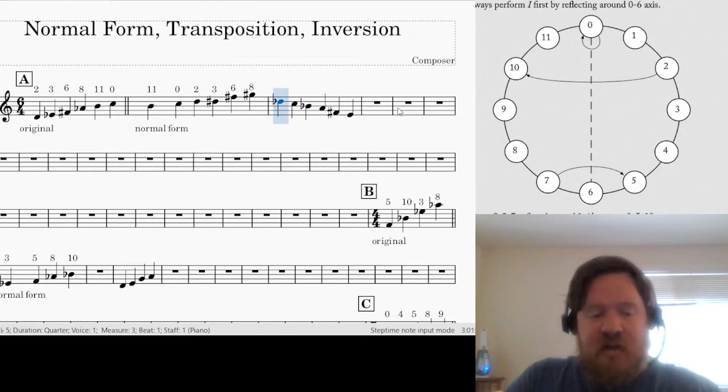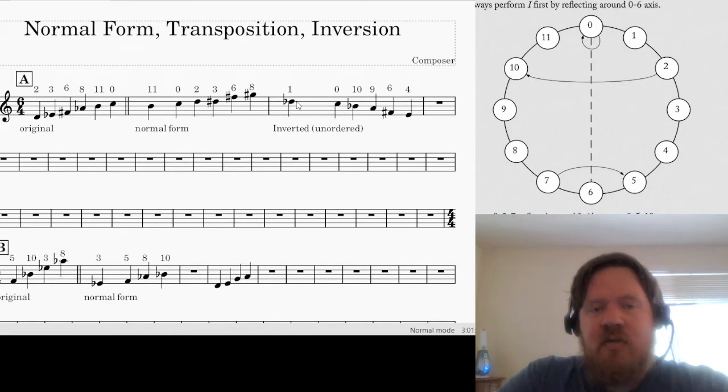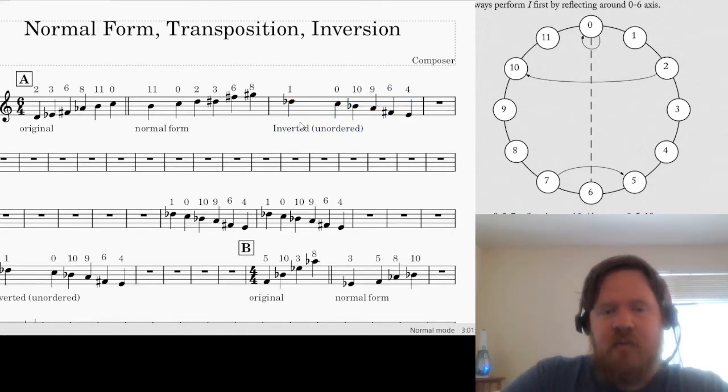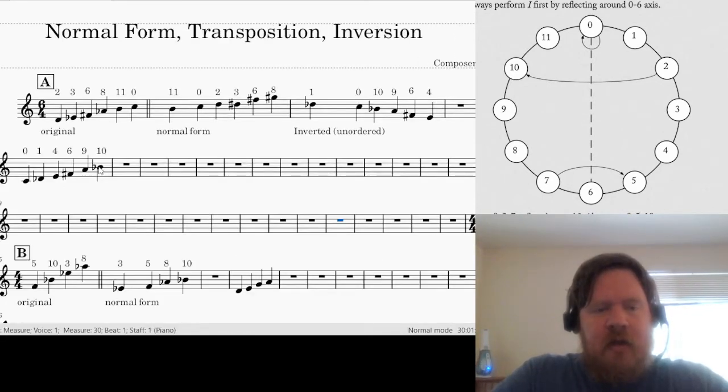These here are the pitches that are inverted. Now we're not done because we need to put this in normal form. We've inverted each one of these pitches. So let's add the numbers so it's easier to see. Now we have each one of the pitches of this original set inverted around this 0, 6 axis. So we have an inversion of each one of the pitches, but it's not in normal form. It's unordered. It's a pitch class set but it's unordered, not in normal form. So the next thing we need to do is put it in normal form. The first thing I would want to do is put these pitches in ascending order.